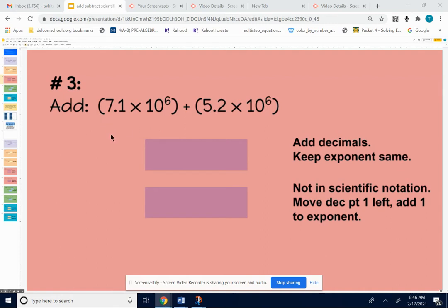Now on scrap paper, when you add those up, keep that decimal point lined up. So when you add 7.1 and 5.2, you're going to get 12.3.